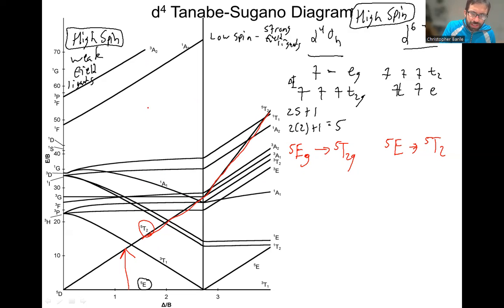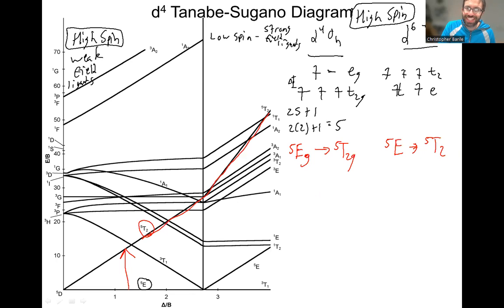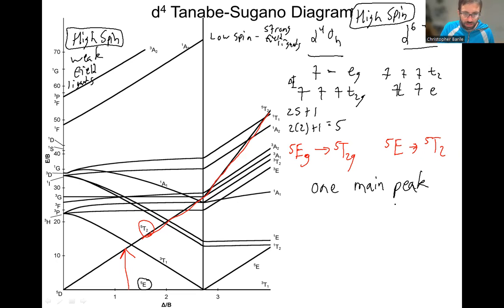All the other states shown — triplet, singlet, singlet, triplet — are all spin forbidden and are going to be very, very weak. So for high spin D4 octahedral complexes, or equivalently high spin D6 tetrahedral complexes, we have one spin allowed transition, meaning one main peak in our UV-visible spectrum.